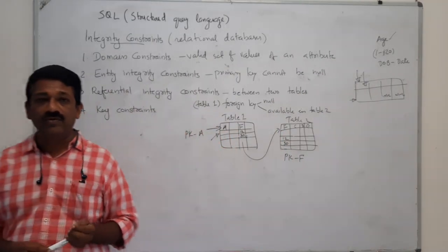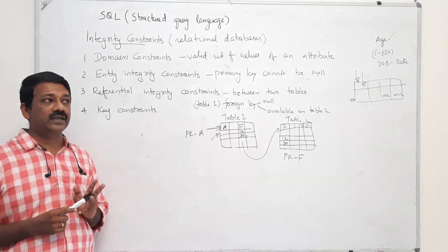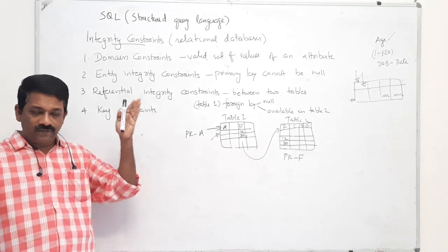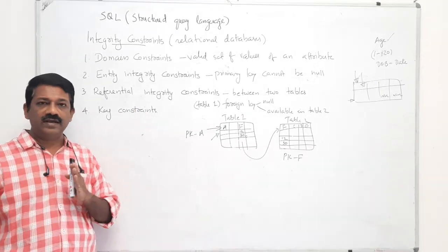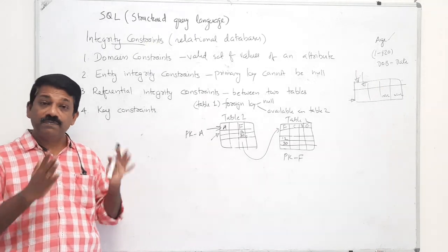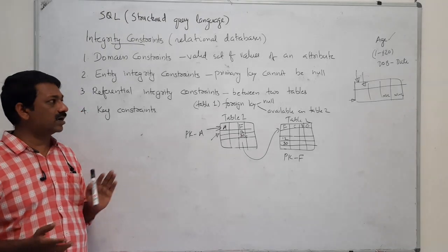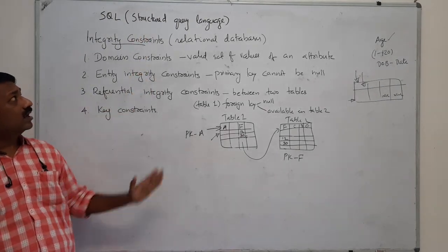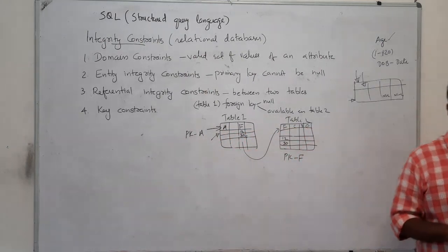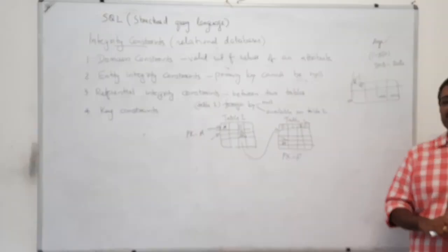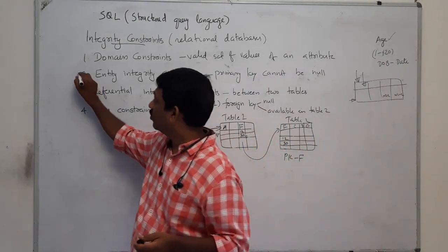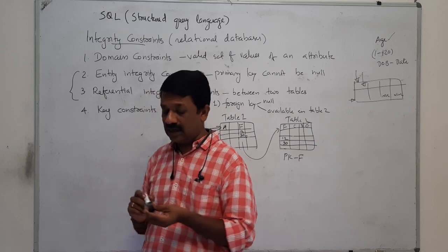Key constraints state that the primary key value cannot be null. For a table with multiple candidate keys, the primary key attribute in particular cannot be null. In summary, the four integrity constraints are: domain constraints, entity integrity constraints, referential integrity constraints, and key constraints — among which entity integrity and referential integrity are the most important.